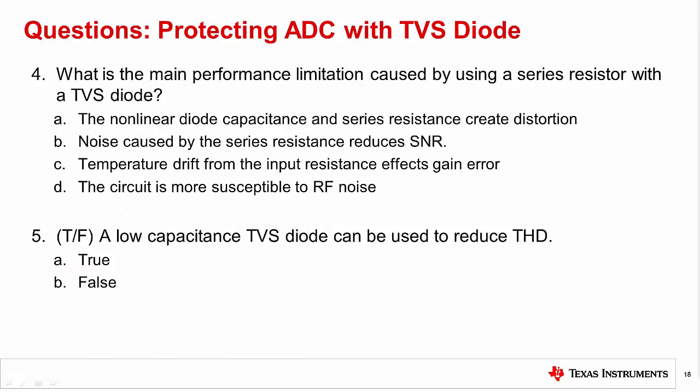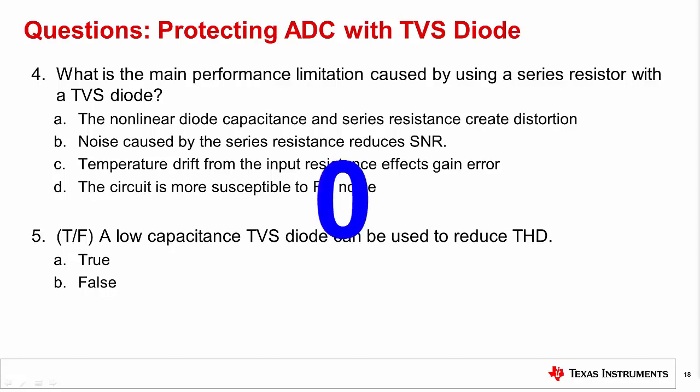Question four: What is the main performance limitation caused by using a series resistor with a TVS diode? The correct answer is A — the nonlinear diode capacitance and series resistance create distortion. The capacitance on a TVS diode has a large voltage coefficient. When this capacitance interacts with the input resistance, it creates a filter with a cutoff frequency that changes based on the input amplitude, effectively distorting the input signal.